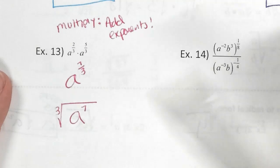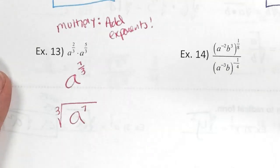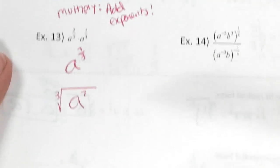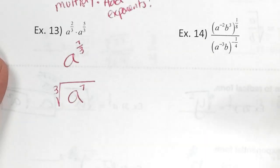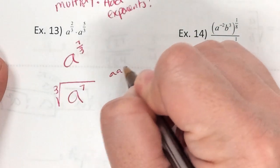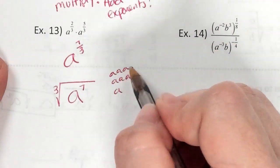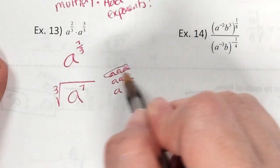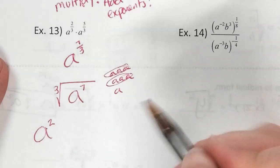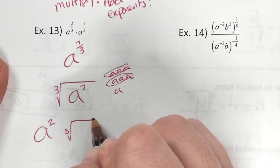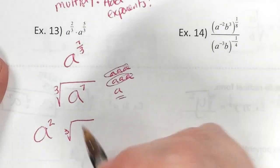7 over 3 does not simplify. What's my root? 3. And what's my power? 7. If there are leftovers — which this one does — we have to put it back in radical form. Does this simplify? Yes. 3 goes into 7 how many times? Twice. So I get to take a squared out. And how many do I have left over? 1.